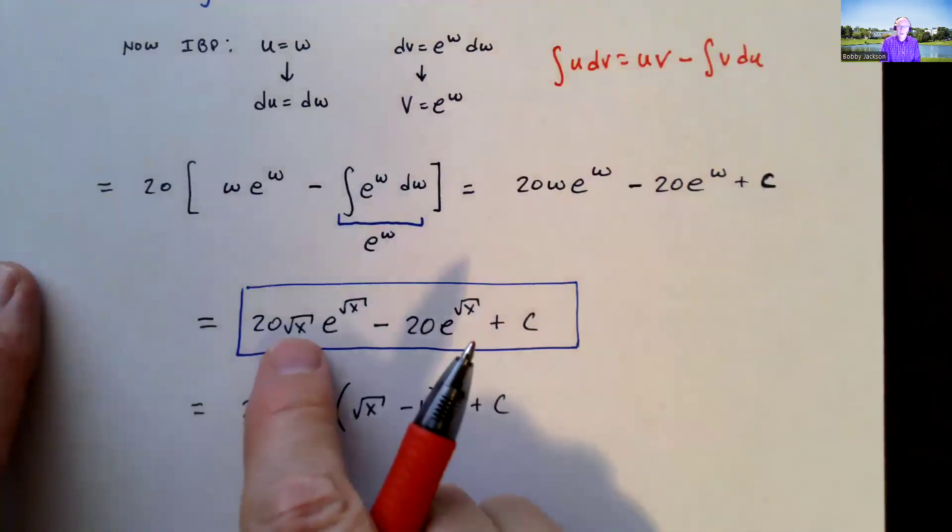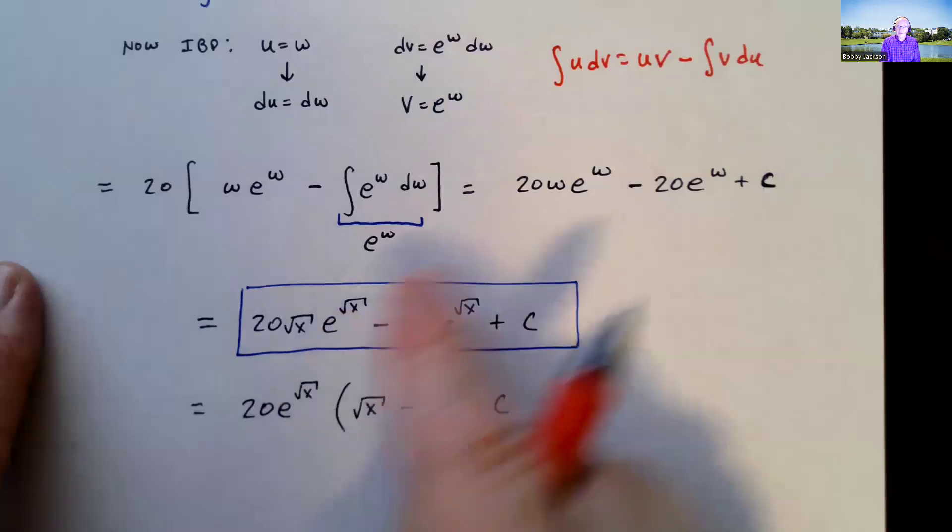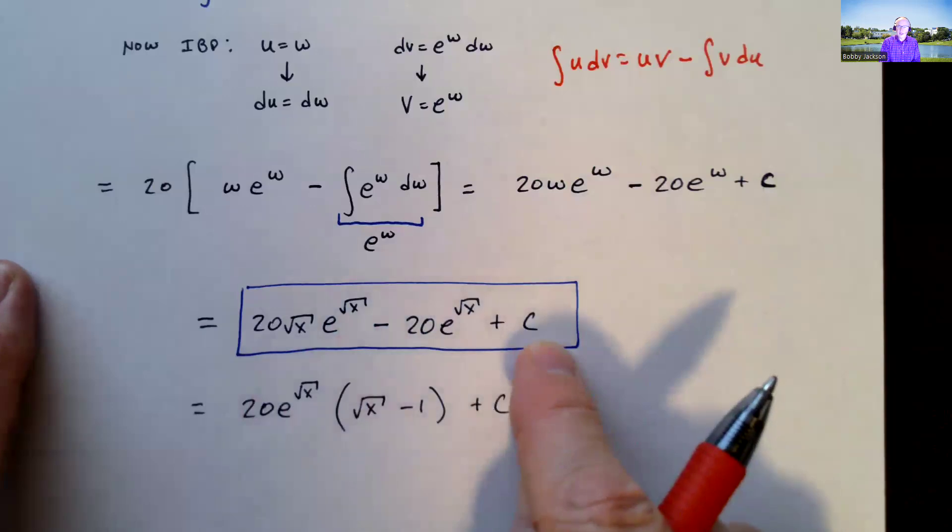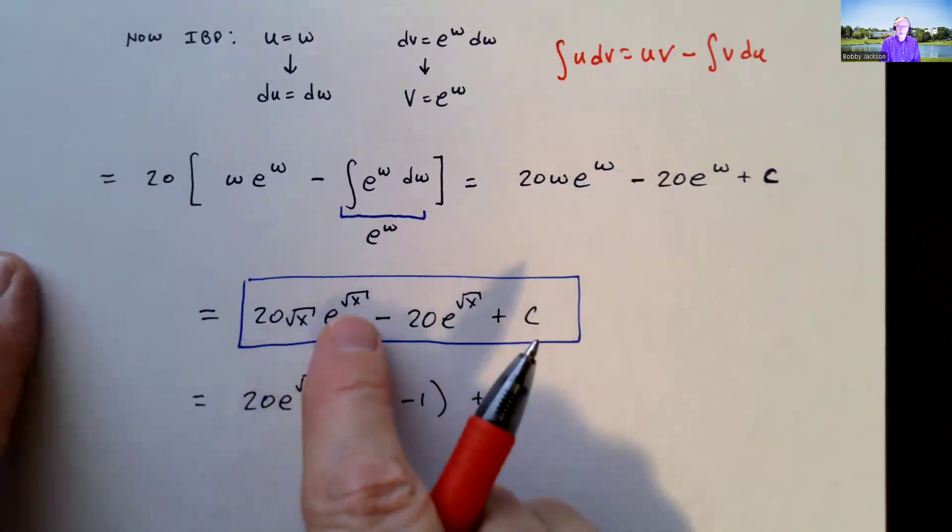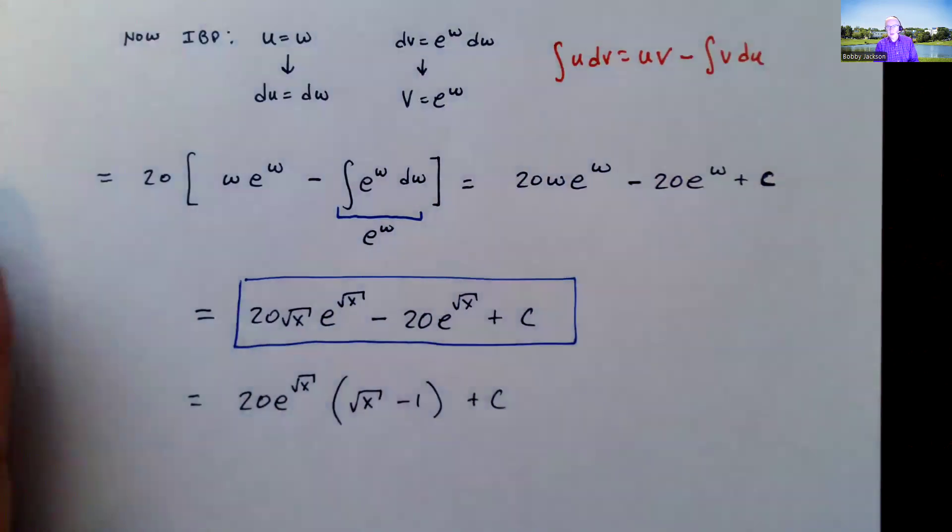So I'll have 20 w square root of x e to the w minus 20 e to the w plus c. This is fine for the answer. I noticed in Achieve they had this. They factored out a 20 e to the square root of x, leaving the square root of x minus 1. You could write it that way as well.